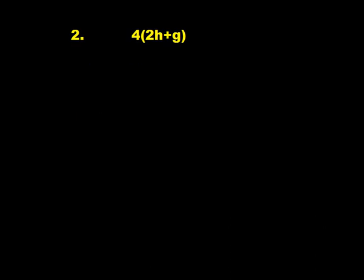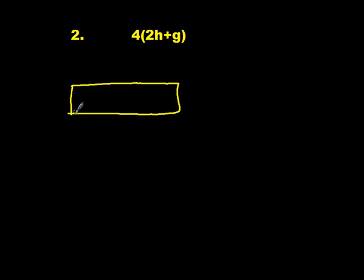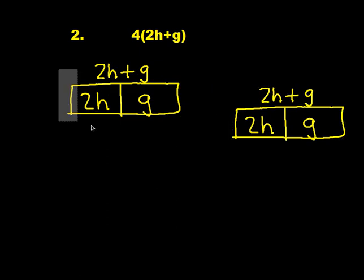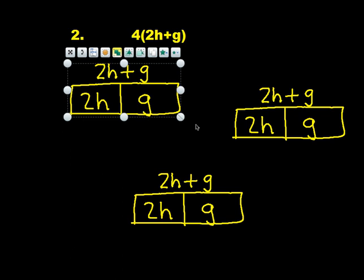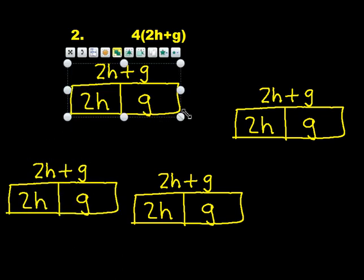Exercise 2. This one is a little different — it says 4 times the sum of 2h plus g. Pause the video, create your diagram, and come back when you are ready. Remember, we need the model and then a second model showing the distributive property. To start, create 4 copies of 2h plus g and join them all together.